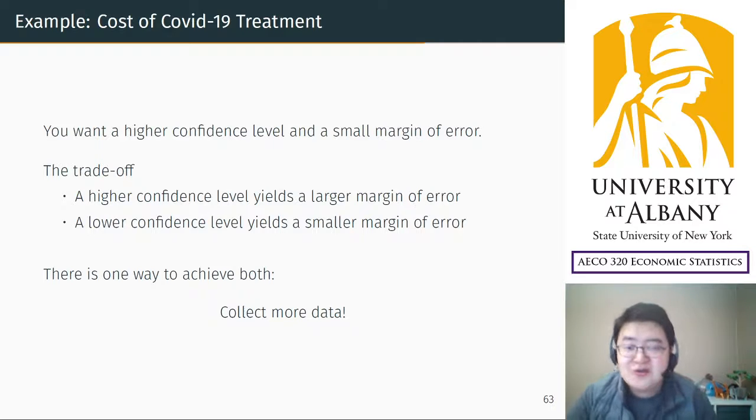It's so easy to calculate the confidence interval. It took like an hour to derive the formula, but applying the formula takes a minute. Now I'm going to consider another interesting question. We always want a higher confidence level and smaller margin of error at the same time, but there is a trade-off between them. Actually, you can achieve both. There is one way, which is to collect more data.